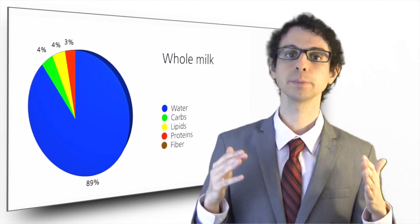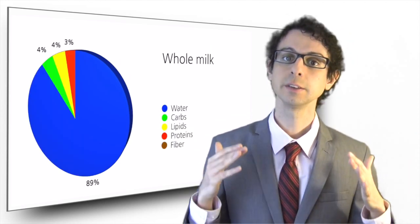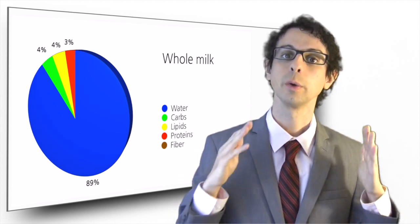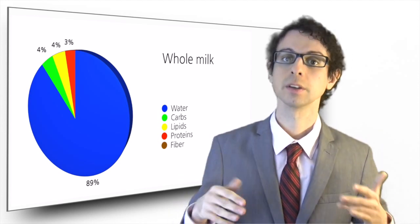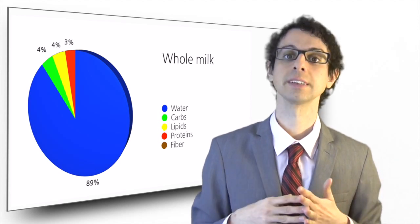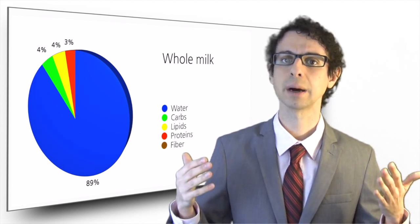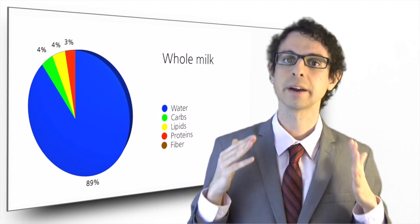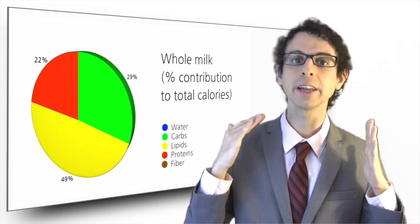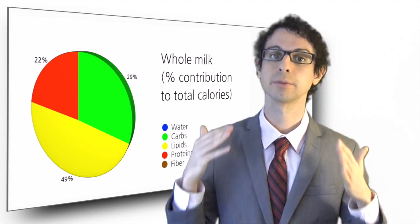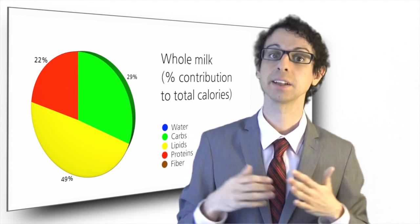For example, this is the percent nutrient composition of whole milk. As you can see, it's mostly water, with 4% of carbohydrates — mostly lactose — 3% of lipids, and 3% of proteins. 3% of lipids doesn't look that much, so why do we always say it's better to drink low-fat milk? Well, if we look at how many of the calories from milk come from fat, we find that it's about half — and that is a lot.